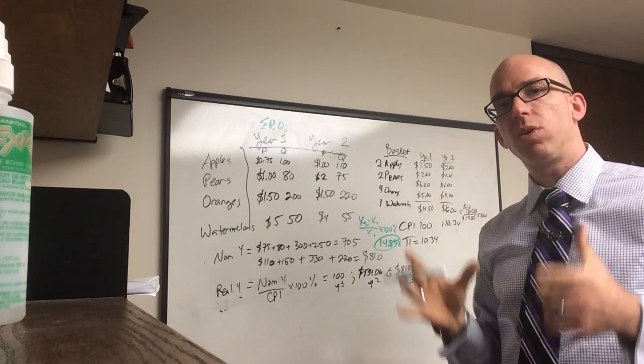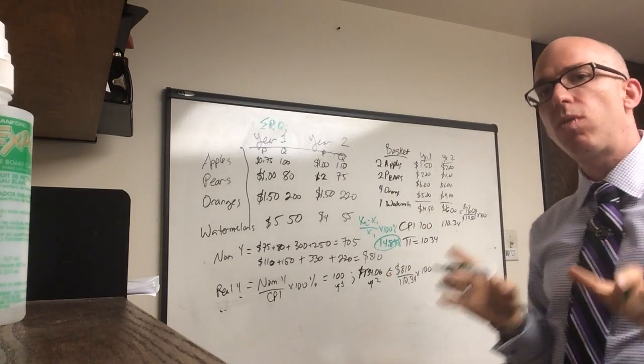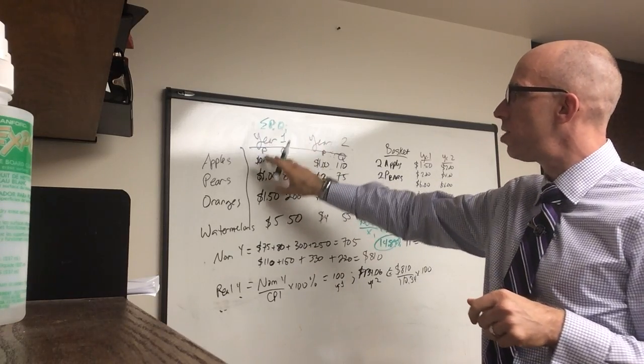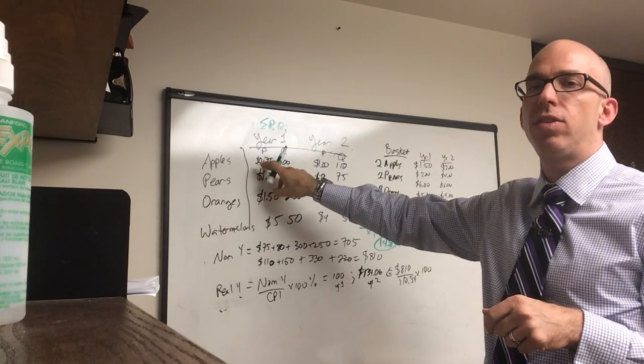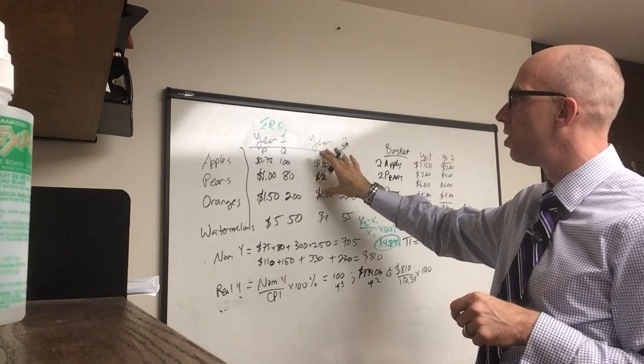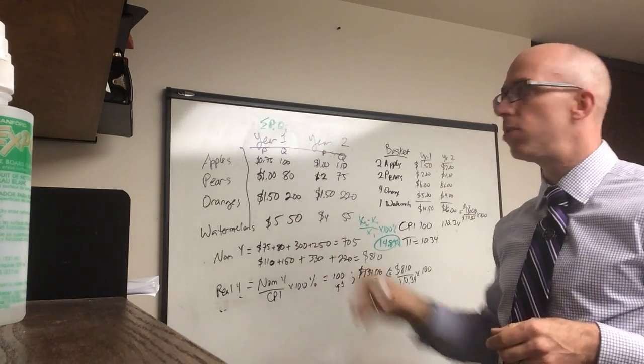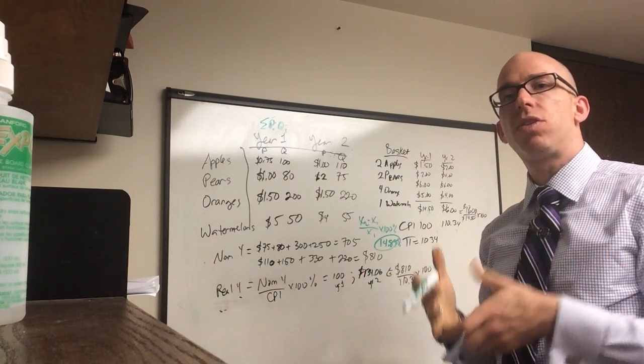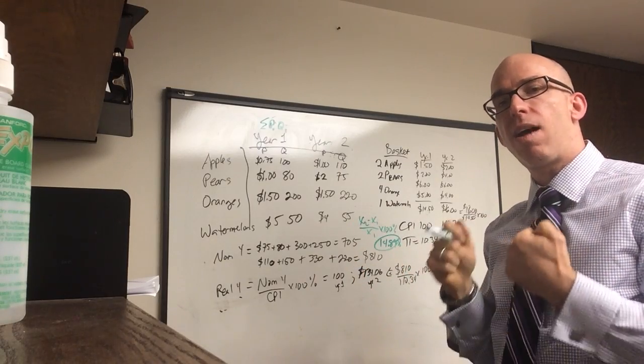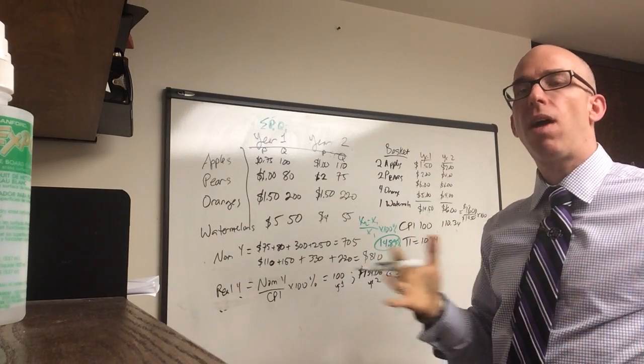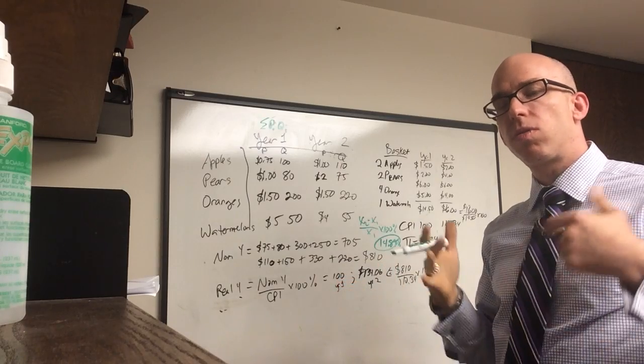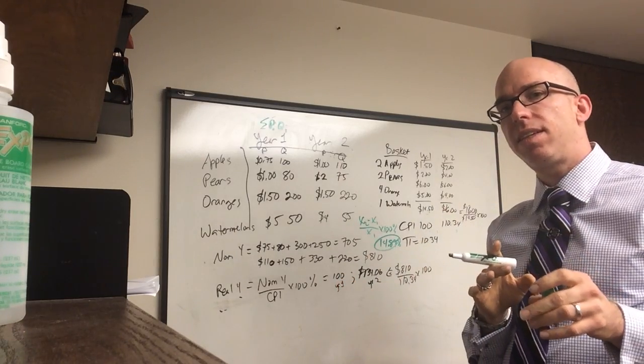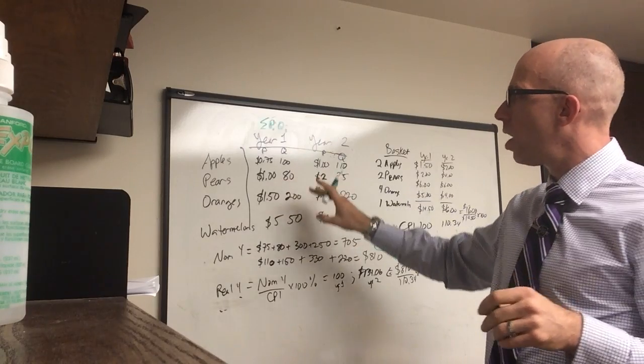So remember, the concept of a real variable controls for prices. So there's kind of two ways to control for prices. One way is to simply ignore the price change and just use one price twice. You can actually recalculate year two using year one prices. You can freeze it. You can hold P constant, and if you hold P constant, then you're left with Q. How much does Q change? The real variable is how much stuff, how much fruit, how many products in the economy.